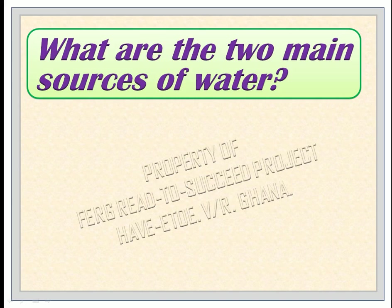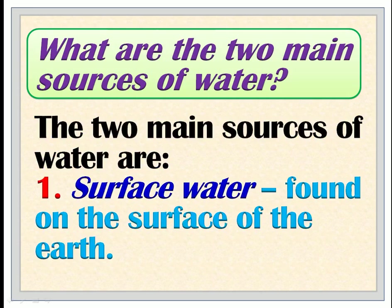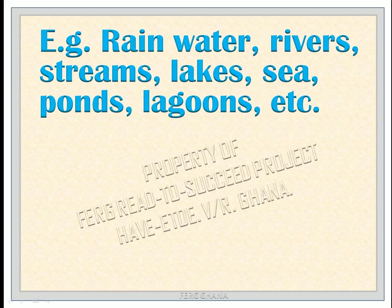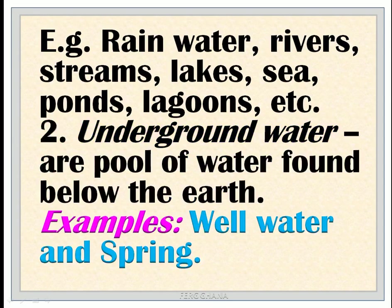What are the two main sources of water? The two main sources of water are: 1. Surface water, found on the surface of the Earth. For example, rainwater, rivers, streams, lakes, sea, ponds, lagoons, etc. 2. Underground water, a pool of water found below the Earth, such as well water and spring water.